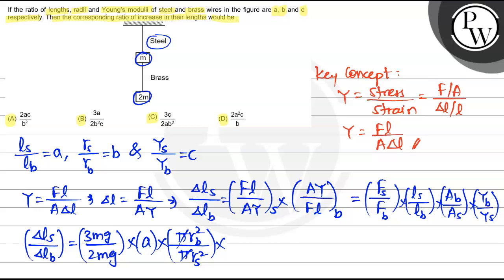Into Young's modulus of brass to steel. See, we have Ys by Yb equals c. So Yb by Ys will be 1 by c.